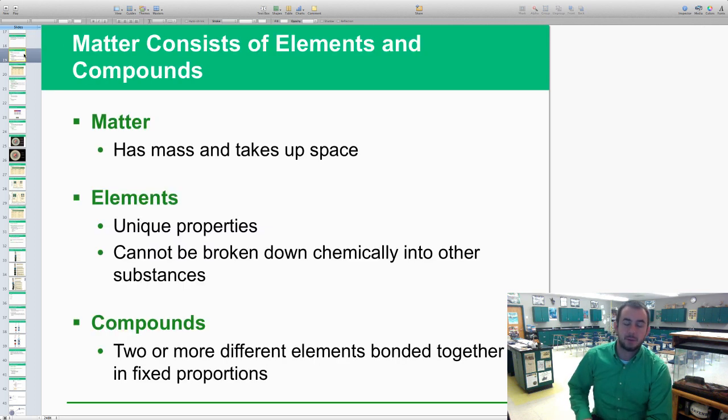A few definitions to know: What is matter? It has mass and takes up space. Simple definition of matter. Elements have unique properties, cannot be broken down chemically into any other basic substance. There's nothing more basic than elements. Examples: helium, hydrogen, oxygen, things like that.